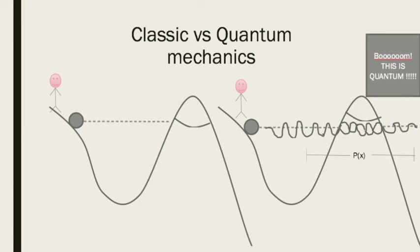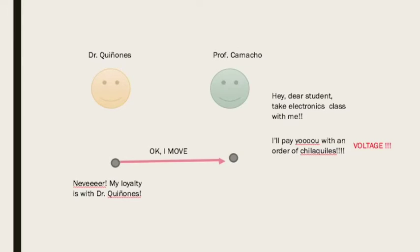So after we know that, let's have another analogy. Let's say I am a student of Tecnologico de Monterrey and I am going to take electronics next semester, which is not going to happen. And I have two options. I have Dr. Quiñones here and I also have Professor Camacho on the other side. And this is me.